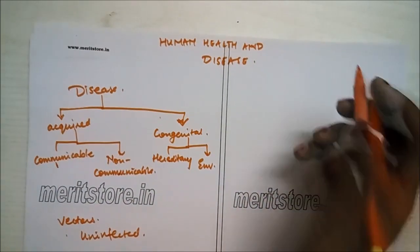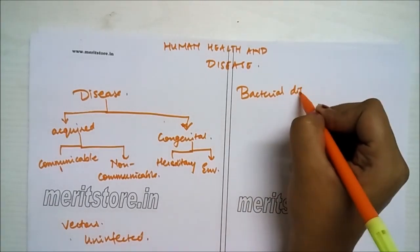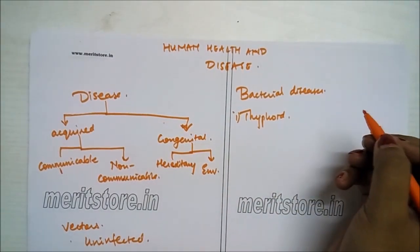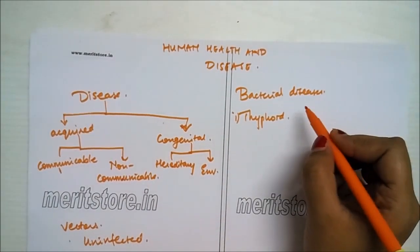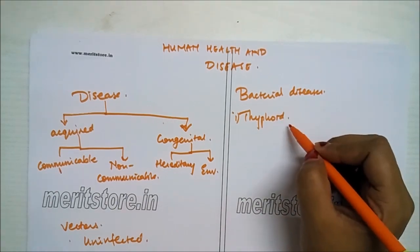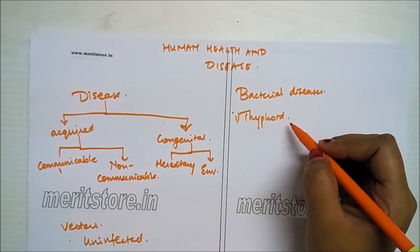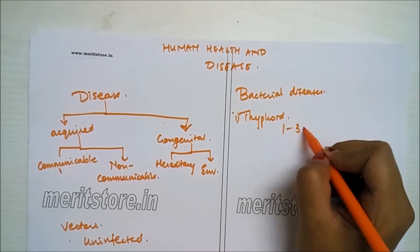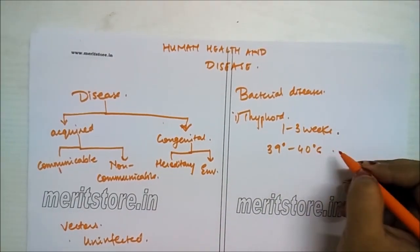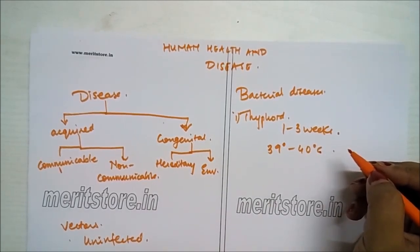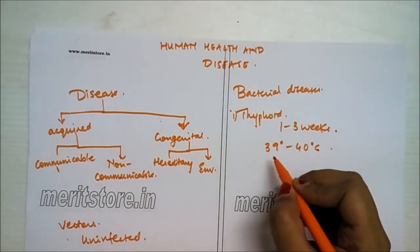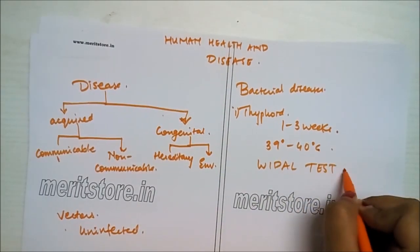Bacterial diseases: First is typhoid. Typhoid is a contagious disease of the intestine caused by Salmonella typhi. The organisms are present in the stool and urine, therefore carried by contaminated food and water. The bacterium enters via the mouth, lives in the intestine and causes lesions in the intestinal walls. Incubation period is 1–3 weeks. Symptoms include sustained high fever (39–40°C), weakness, stomach pain, constipation, headache and loss of appetite. Intestinal perforation and death may occur in severe cases. Typhoid fever can be confirmed by the Widal test.